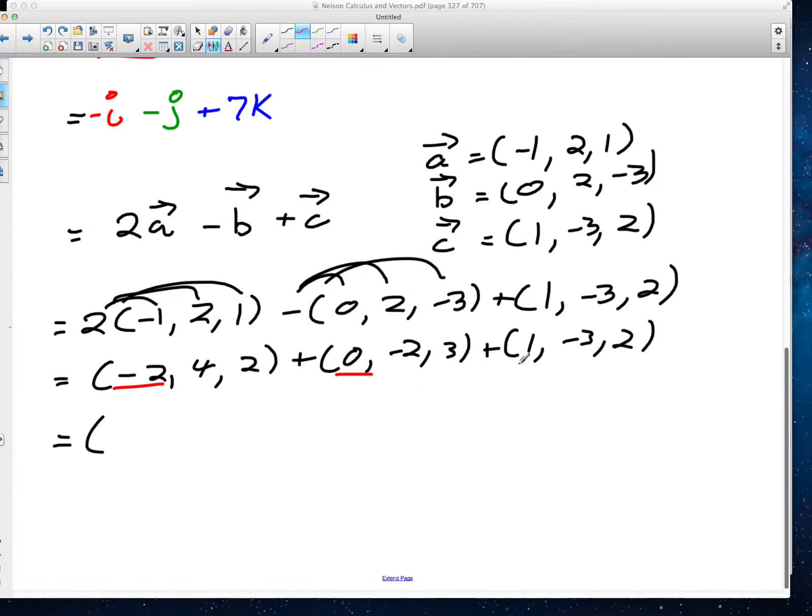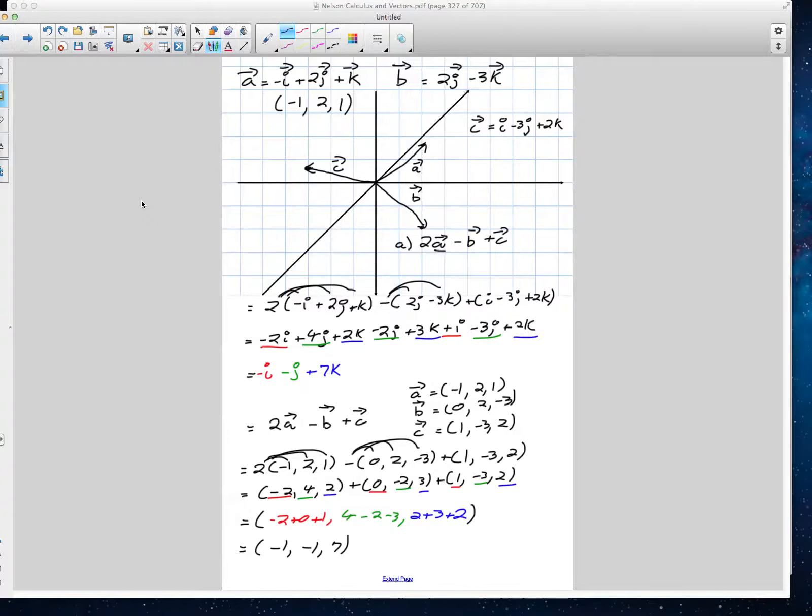And then when we're in component form, we're just going to add up each of the respective components. These are all of our x values, so we're going to put them together: negative 2, plus 0, plus 1. These are all of our y values, which is 4 minus 2 minus 3. And finally, 2 plus 3 plus 2. And that's solving this with component form. We'll end up with the exact same idea: negative 1, negative 1, and 7. So if you notice, it didn't matter which way we chose to solve this, we ended up at the same answer, whether we used our standard form or our component form in this question.